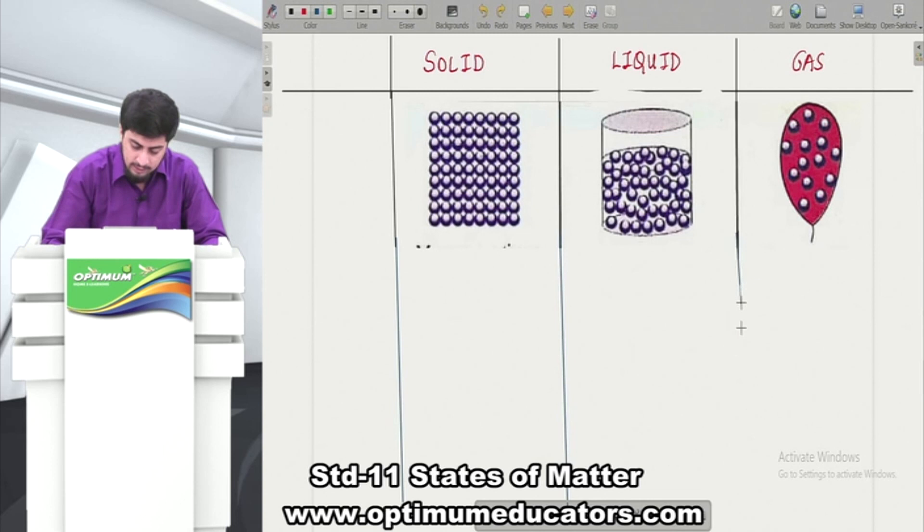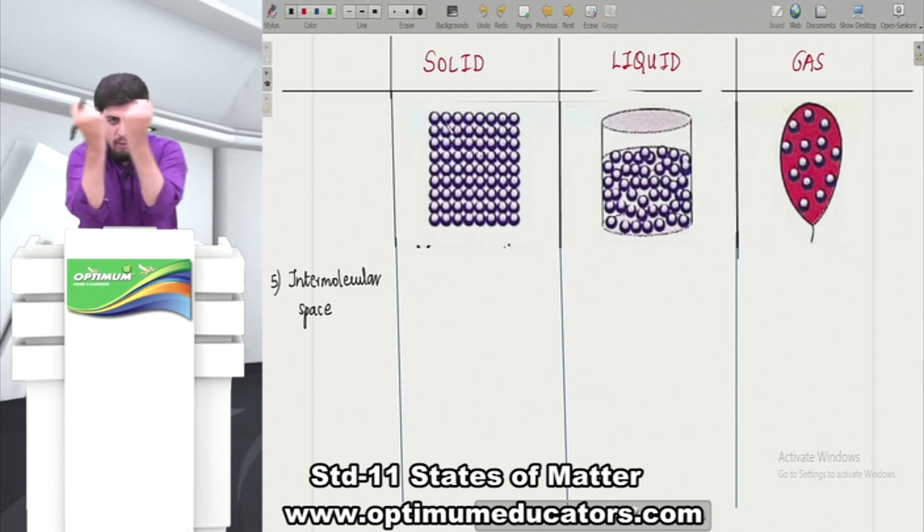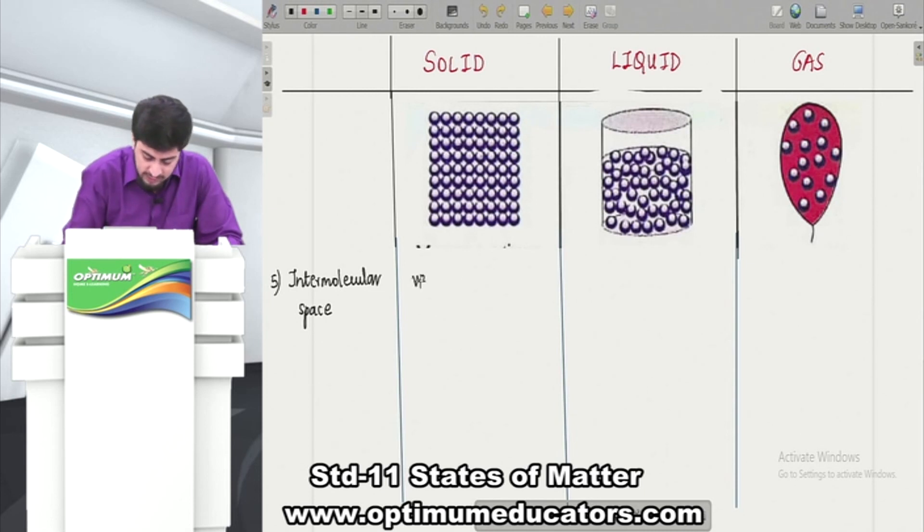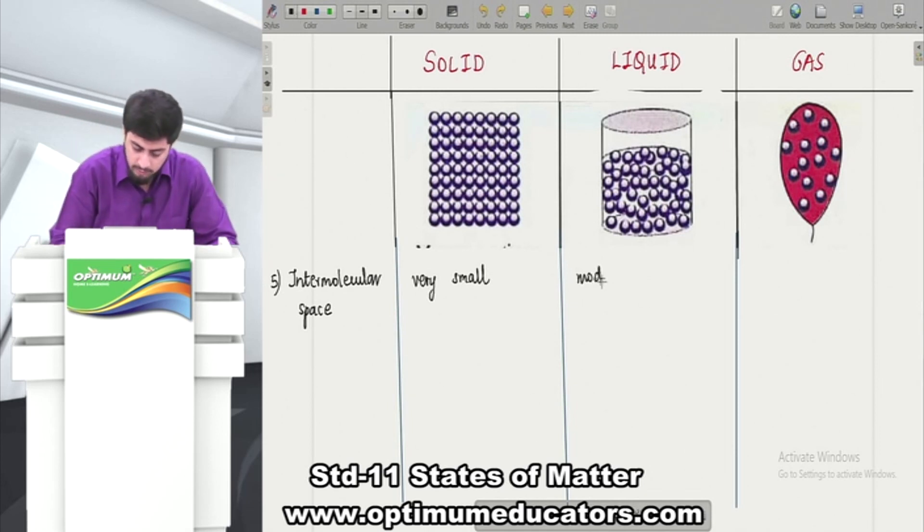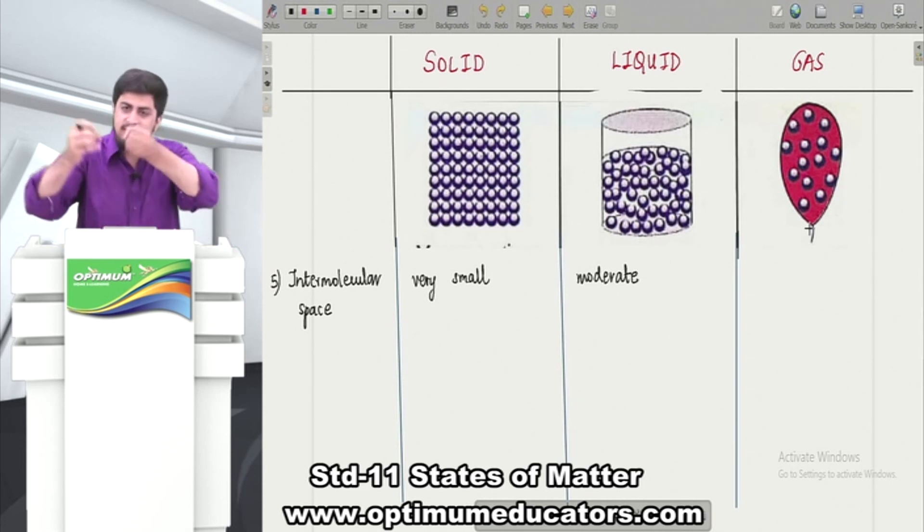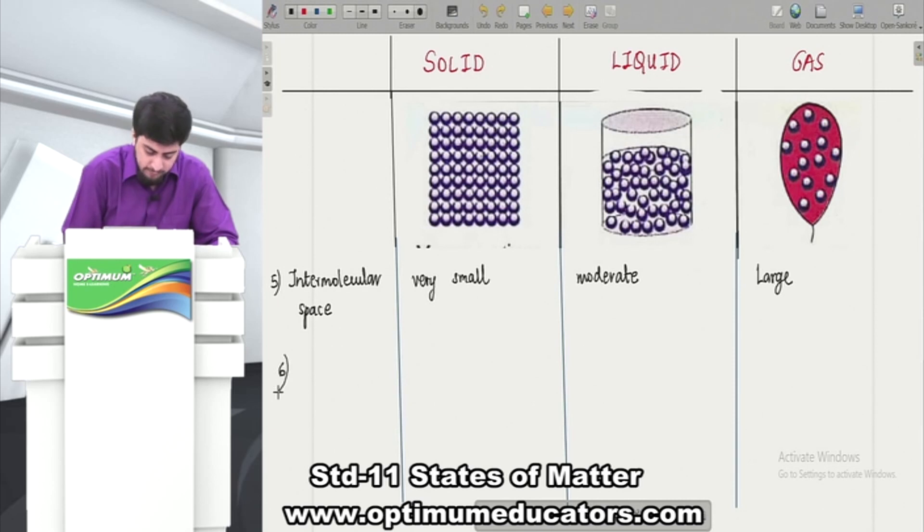The next point is intermolecular spaces - the space between two molecules. In solid, there is almost no space, molecules are stuck together. There is no intermolecular space. I can write very small intermolecular space. In terms of liquids, I can say moderate - not too far but moderate intermolecular space. In terms of gases, molecules are very far apart. Between two molecules, all this space is empty. So I can say they have large intermolecular space.